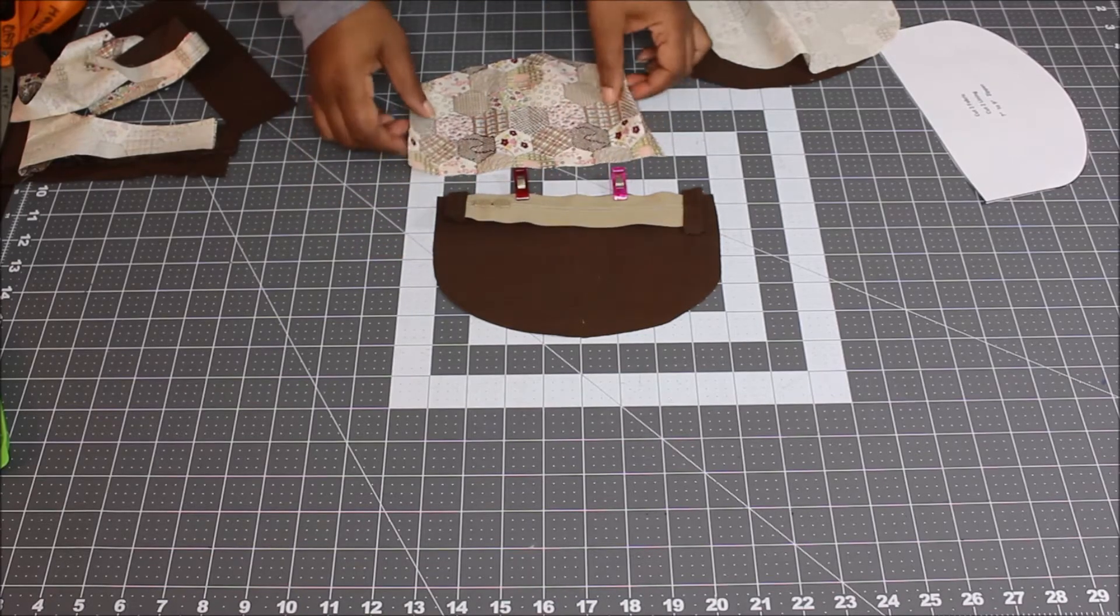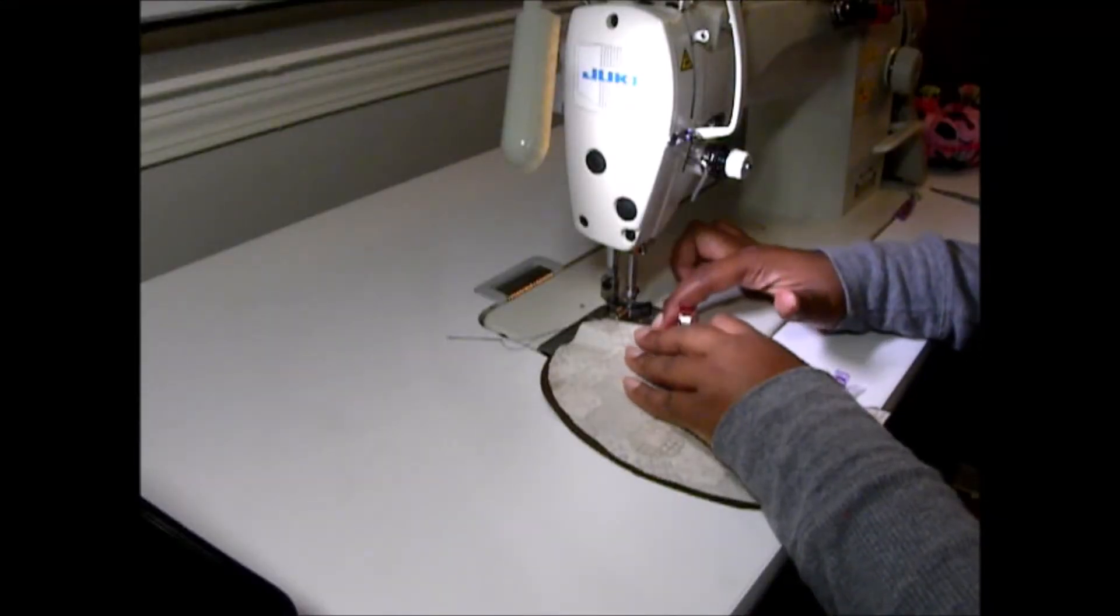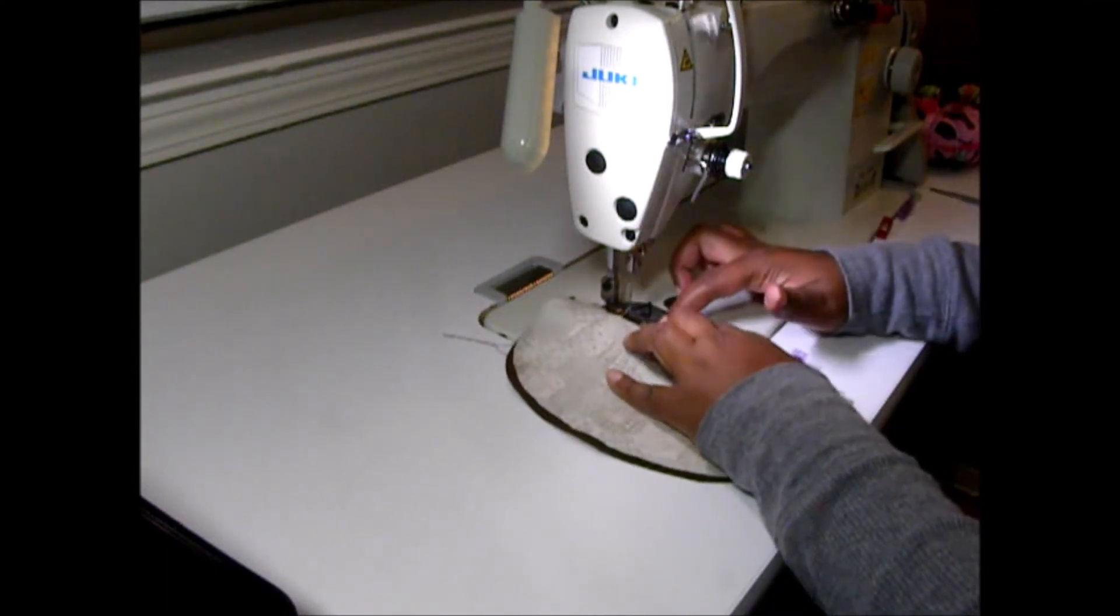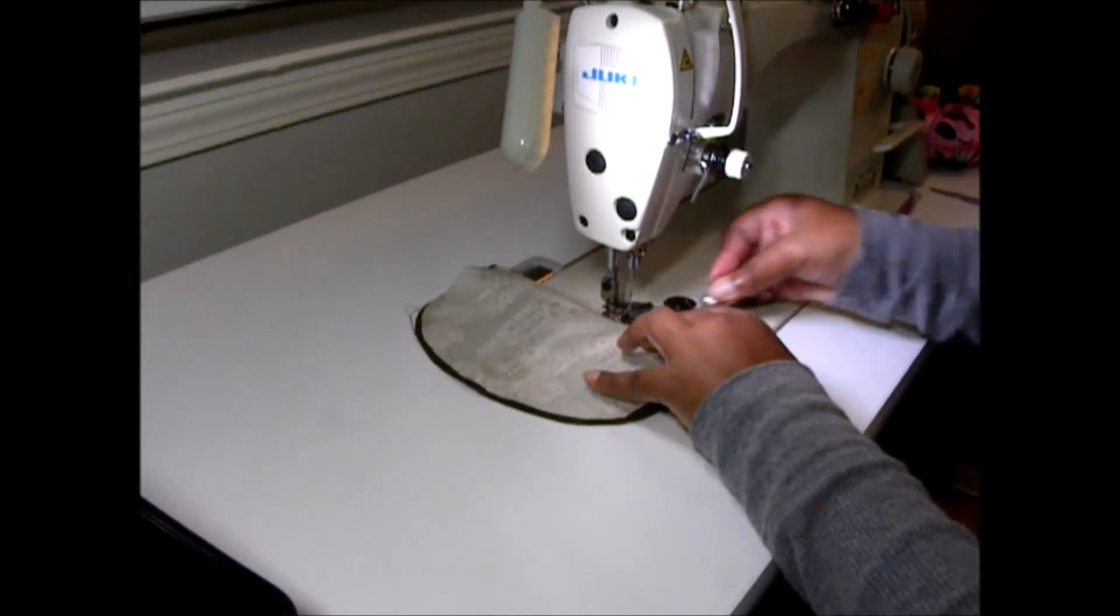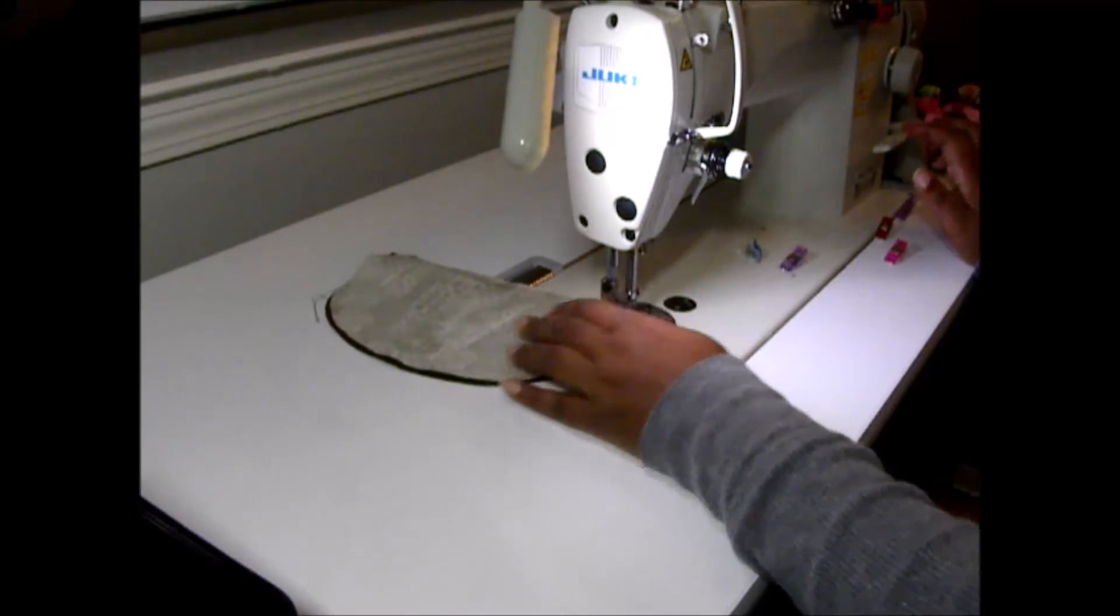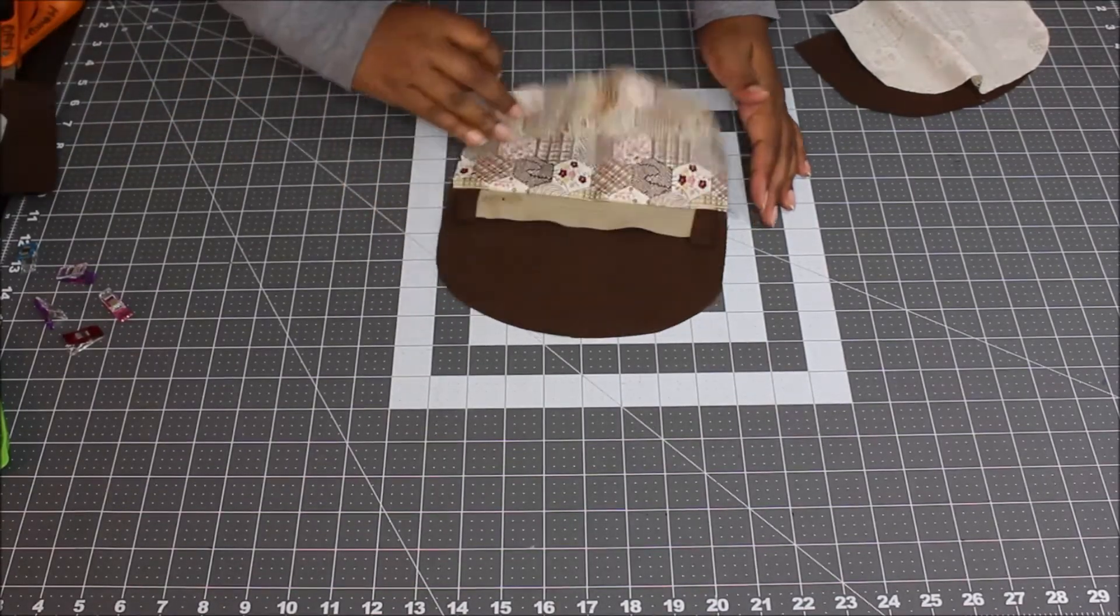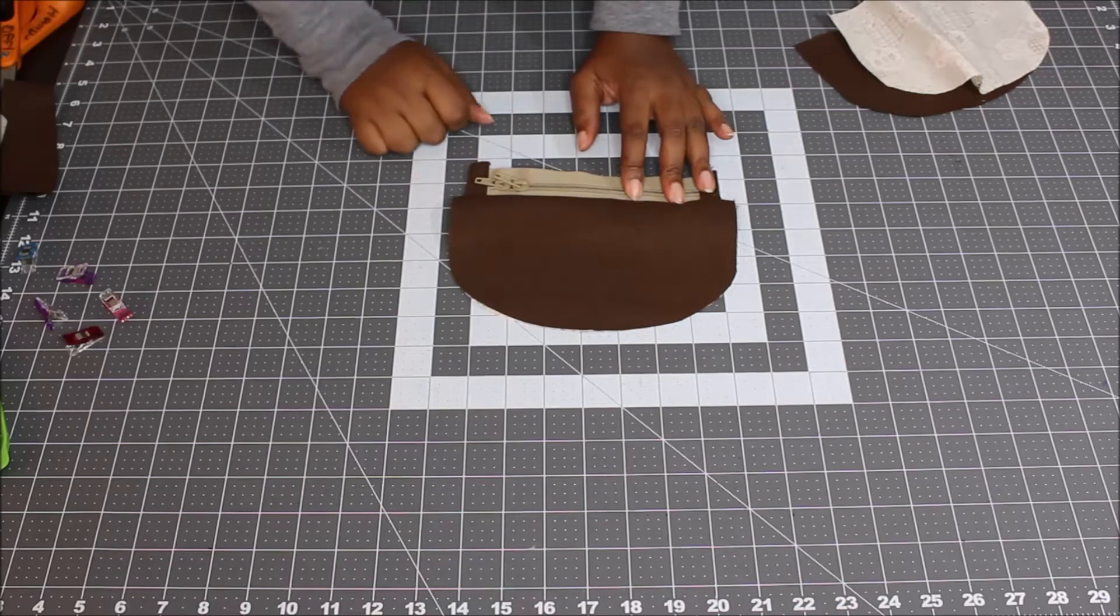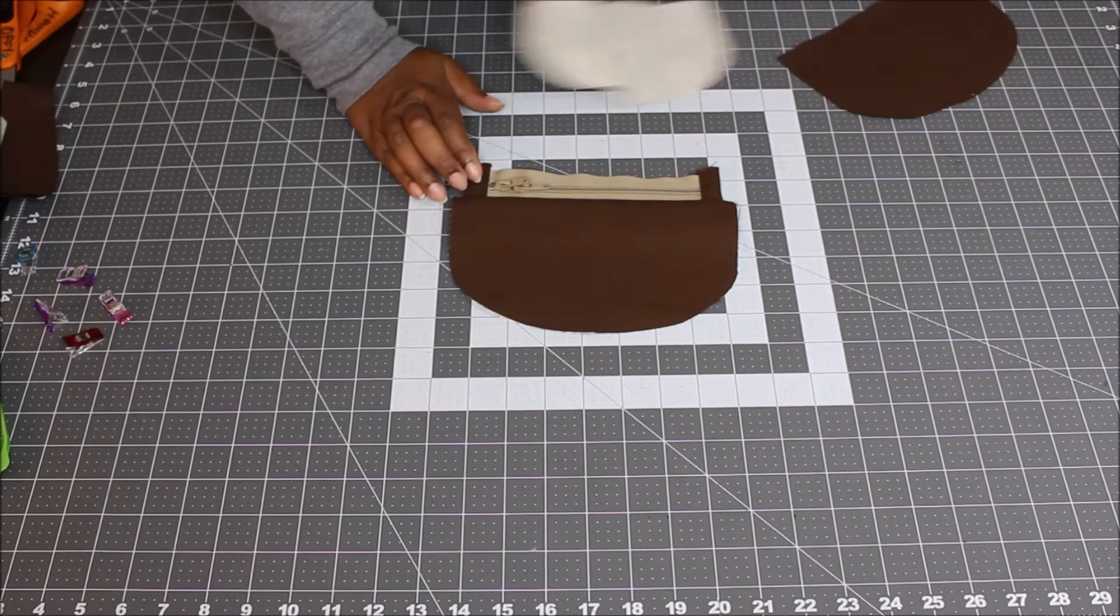You have your zipper pull facing down on the right side of your main fabric. Now take your lining fabric and place it on top, so your two right sides of your fabric are facing. Now that you have those two pieces sewn to your zipper, you can flip this up and then you will flip them so that the wrong sides are facing. Give it a good press and then you'll top stitch down this edge. After you top stitch down the edge, you take your other pieces and add them to the other side of the zipper.